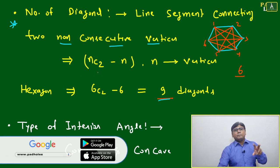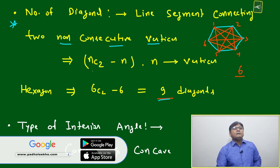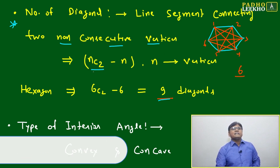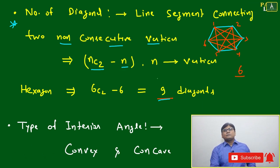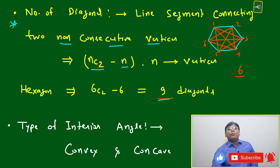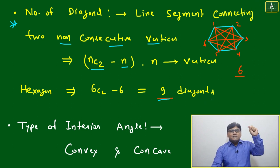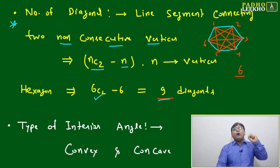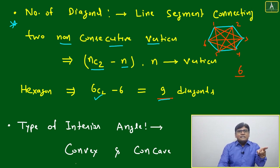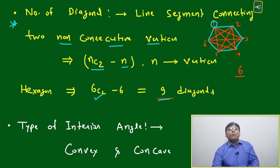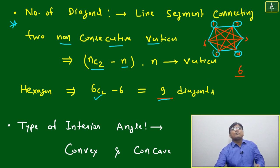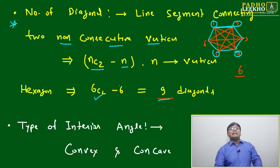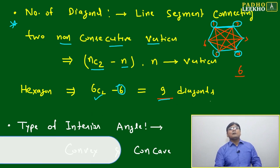Another way using permutation and combination: pick any two vertices out of n vertices — that gives nC2 combinations. But joining consecutive vertices forms a side of the polygon, not a diagonal. So out of six vertices, six C2 gives all combinations including sides. Subtract the six sides: six C2 minus six equals nine diagonals.